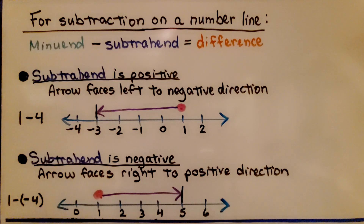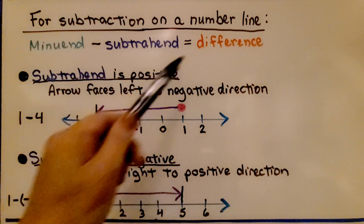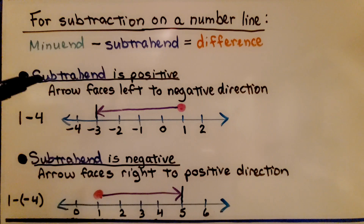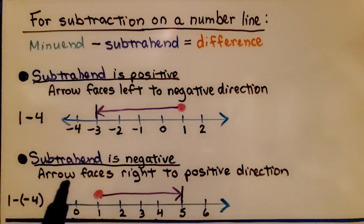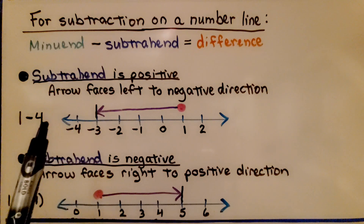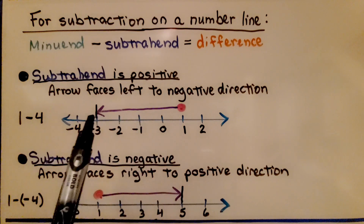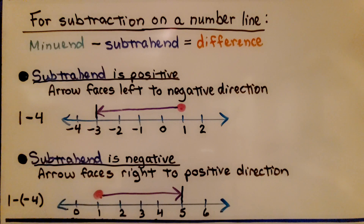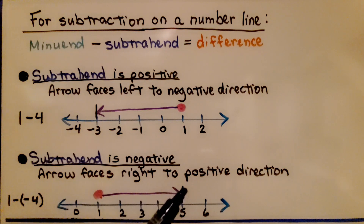For subtracting integers or rational numbers on a number line: the first number is the minuend, the second number is the subtrahend, and the answer is the difference. If the subtrahend is positive — for example, positive 1 minus 4 — the arrow faces left in the negative direction; we're taking away 4 from 1. If the subtrahend is negative — for example, 1 minus negative 4 — the arrow faces right in the positive direction. Put this in your notes to help with homework involving number lines and subtracting negatives or positives.